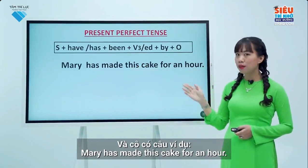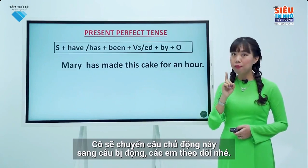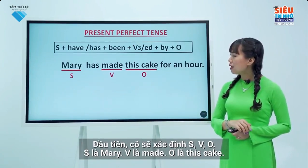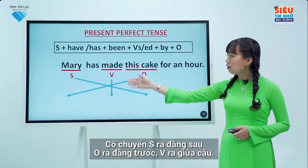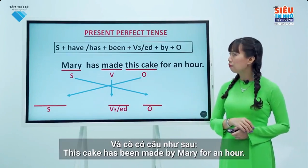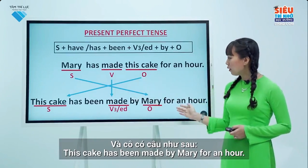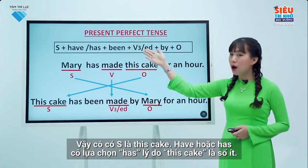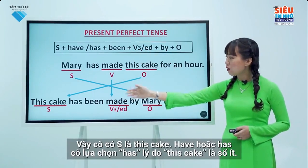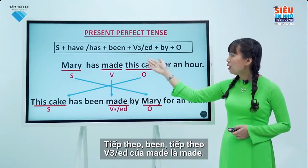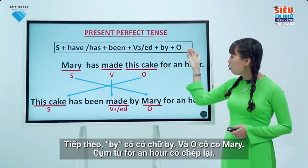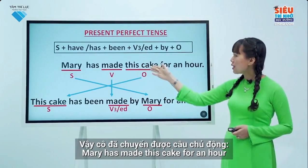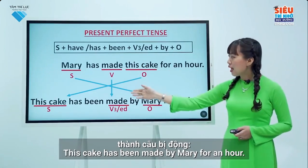I will change the active sentence 'Mary has made this cake for an hour' to passive form. First, I determine: subject is Mary, verb is made, object is this cake. I move the object to the beginning and subject to the end. The result is: 'This cake has been made by Mary for an hour.' Checking against the structure: subject — this cake; has (because 'this cake' is singular); been; made (verb 3 of 'make'); by Mary; for an hour remains the same.